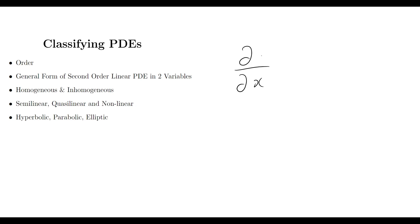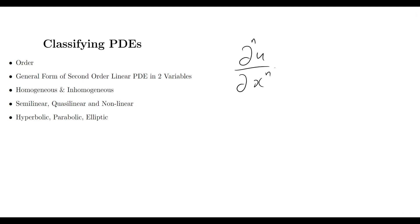What exactly does it mean when we say the order of a partial differential equation? Simply, we're looking at the power of the derivative. If we take the partial derivative of u with respect to x once, it is a first order partial differential. The second derivative of u with respect to x is second order, and so on up to the nth order partial differential.